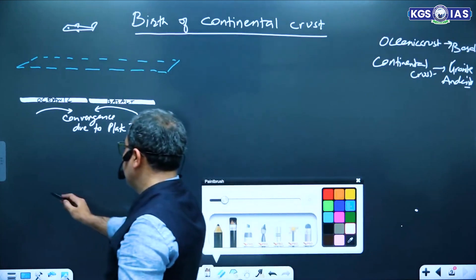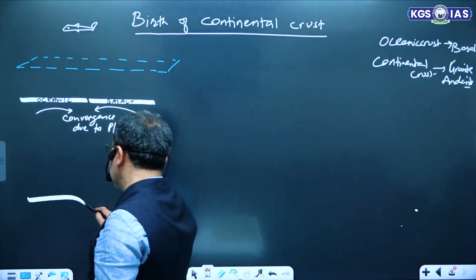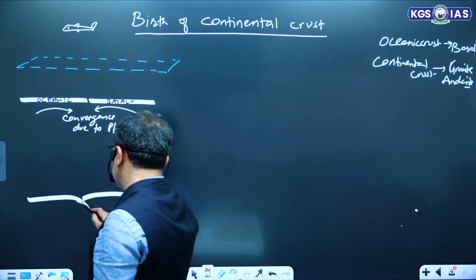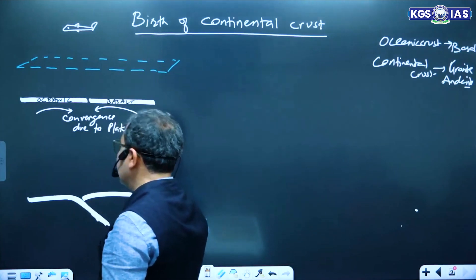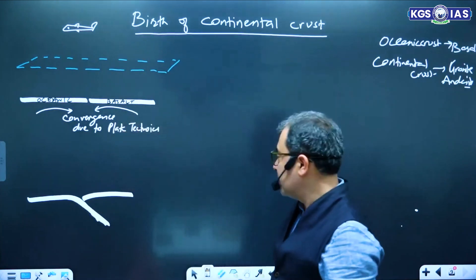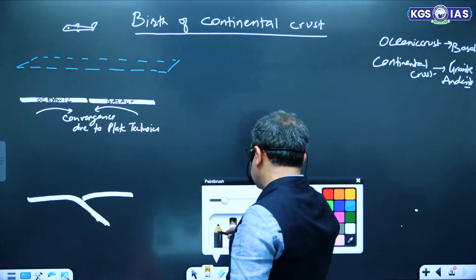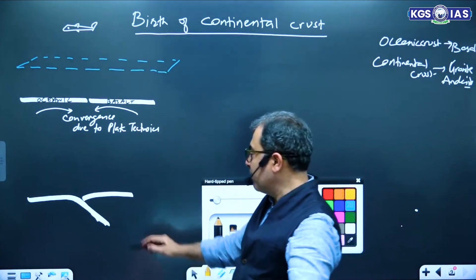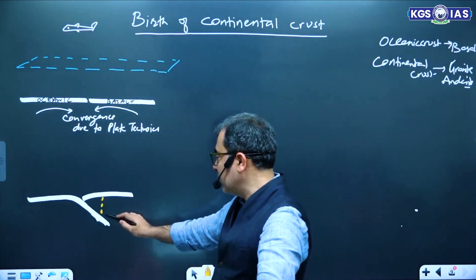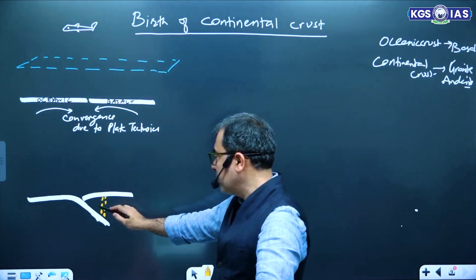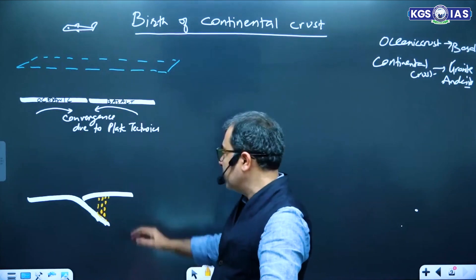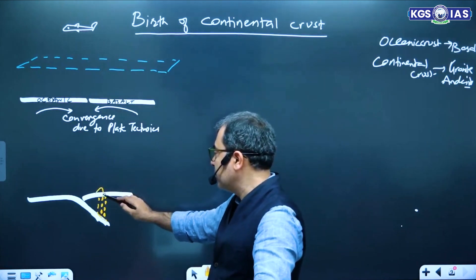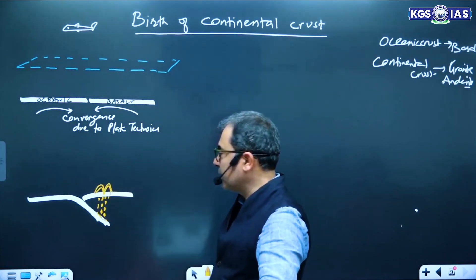The heavy plate goes down — it gets subducted. As it goes into the hotter area, will it melt? Yes! And will it rise? The plate melts and rises, forming volcano and solid magma.